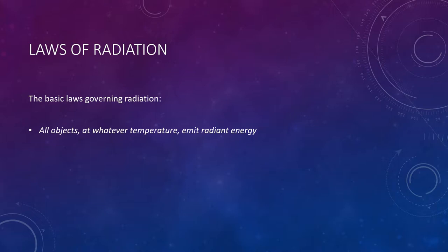There are a few basic laws that govern radiation. First, all objects at whatever temperature emit radiant energy. Hence, not only hot objects such as the Sun, but also Earth, including its polar ice caps, are continually emitting energy.